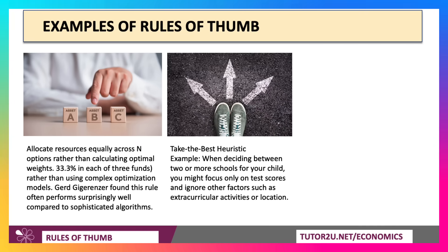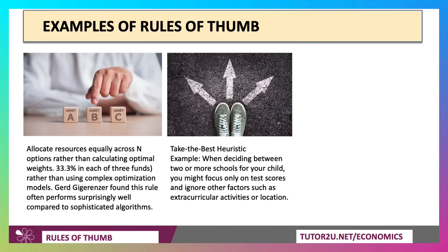A second example is the take-the-best heuristic. You might be deciding between two or more schools for your children, and you might say: let's just take one measure — we'll take the best test scores — and that's our choice. That will be a heuristic. You ignore other factors: extracurricular activities, quality of teaching, location, and so on.